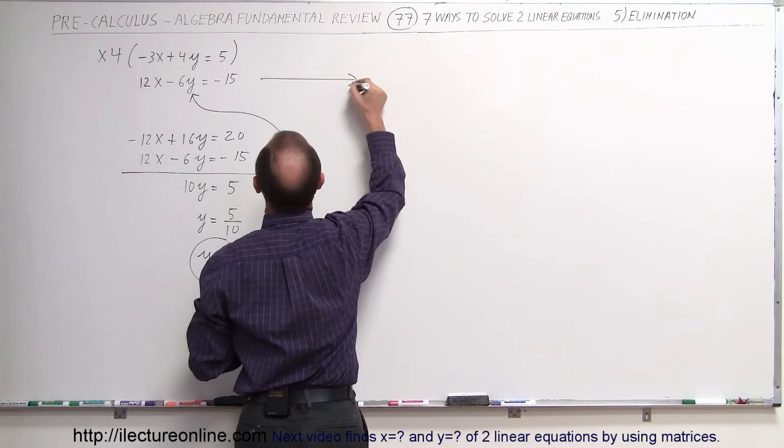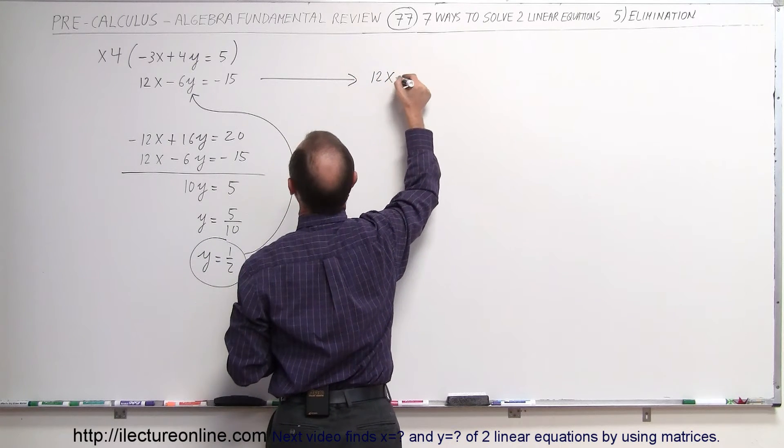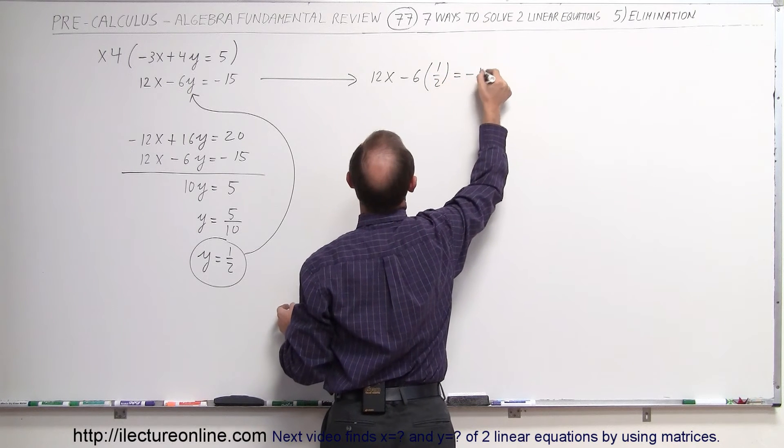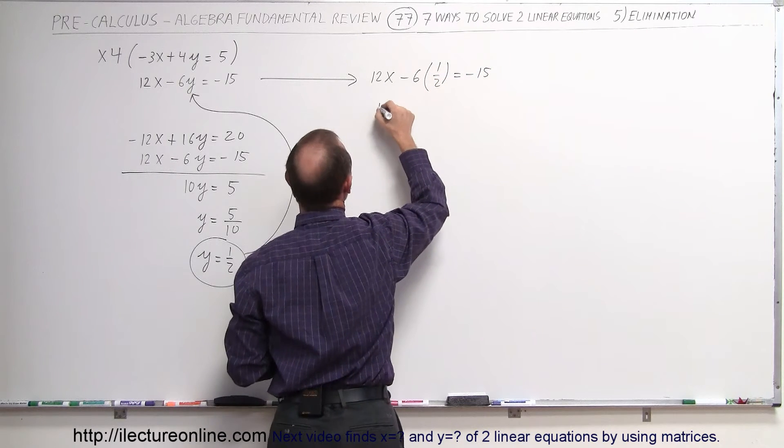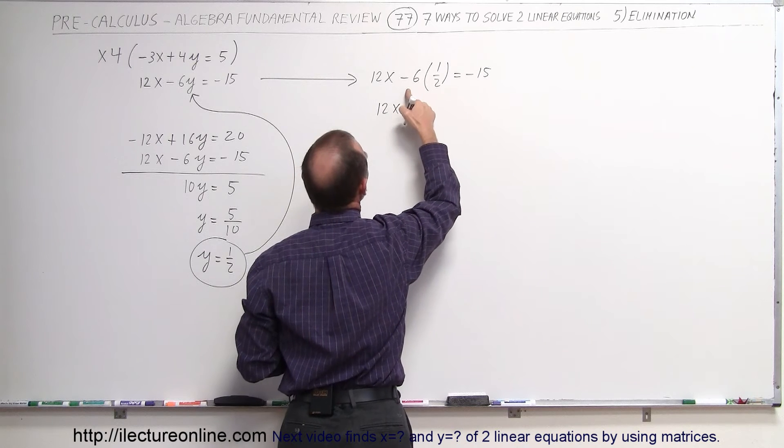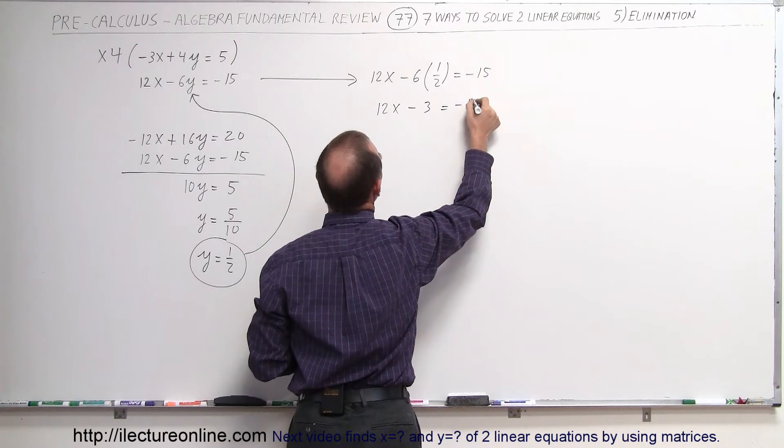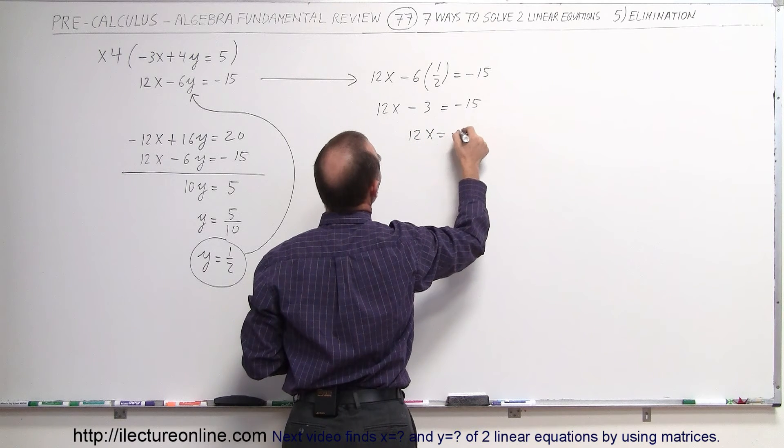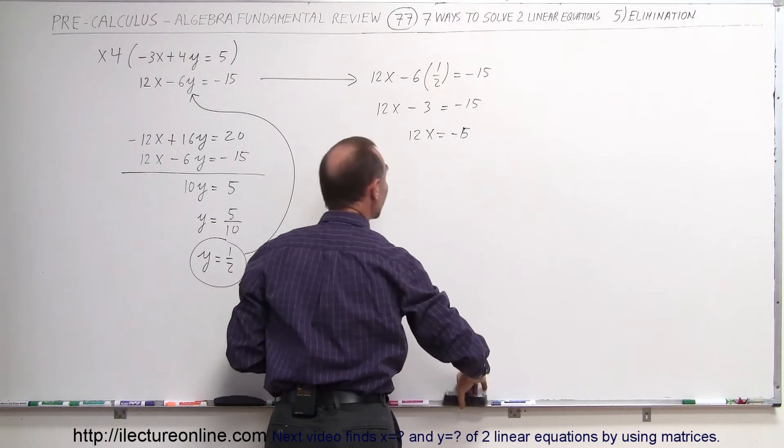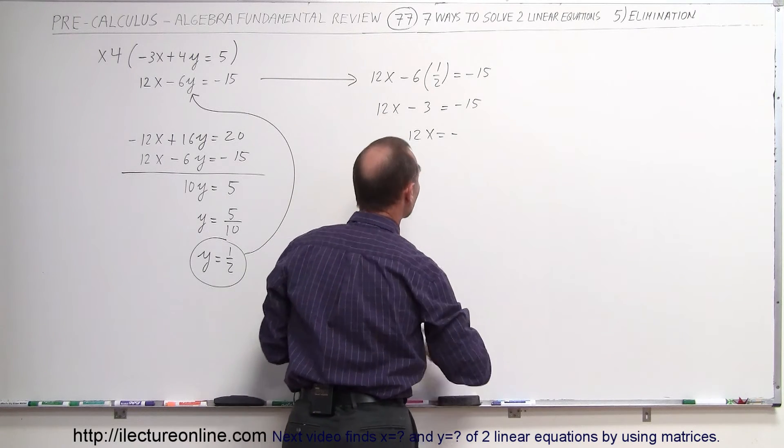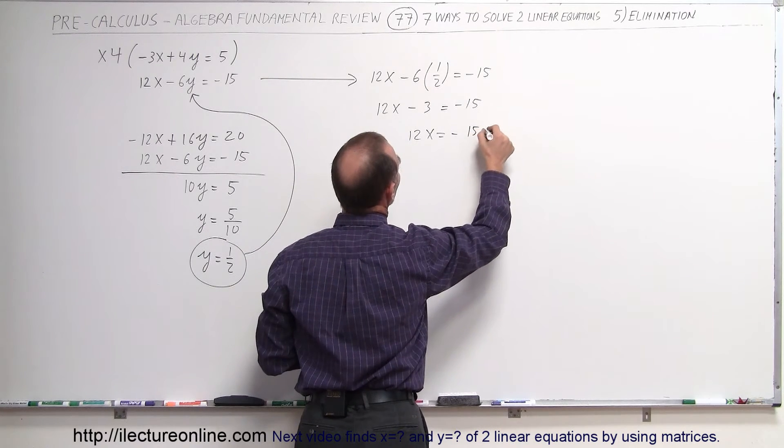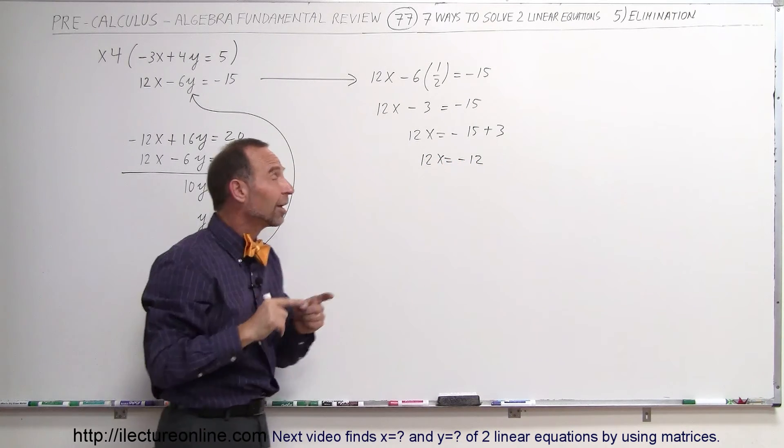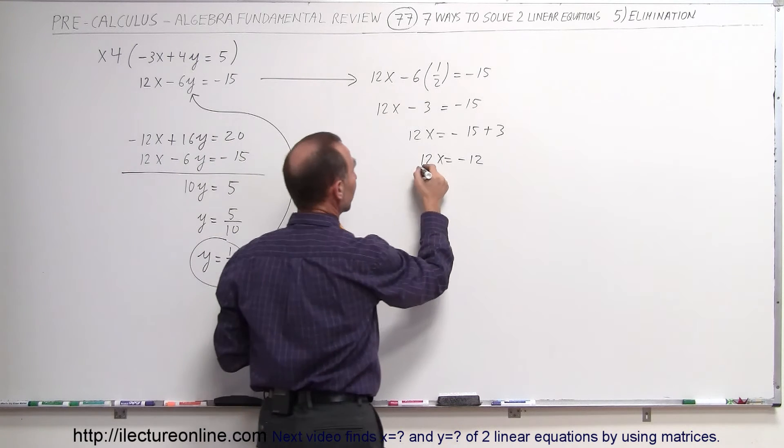So when I do that, I get 12x minus 6 times y, which is 1 half, equals minus 15. So we get 12x minus 6 times the half, that's minus 3, equals minus 15. Moving the 3 across, I get 12x is equal to minus 15 plus 3, or 12x is equal to minus 12.